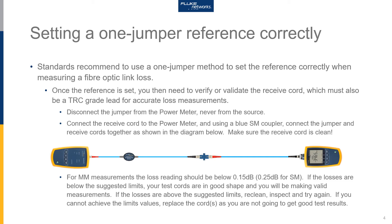Make certain the receive cord connectors are clean before connecting. Once you have the jumper cord and receive cord connected together, you'll be able to measure the loss of the mated cords. For multimode fiber measurements the loss reading should be below 0.15 dB. If you're validating single mode cords, the loss reading should be no more than 0.25 dB. The extra 0.05 dB allowed takes into account field conditions. If the measured results are below our suggested limits, your cords are in good shape and you will be making valid measurements.